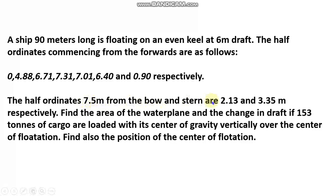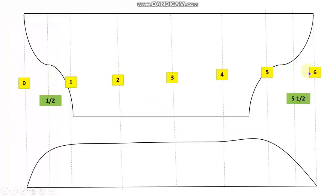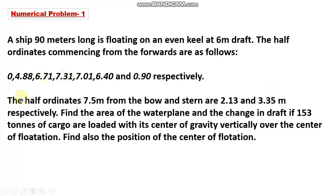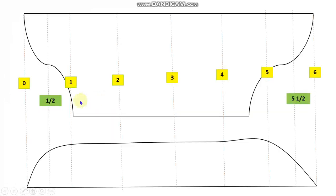There is also a mention of half ordinates 7.5 meters from bow and stern. For a 90-meter-long vessel with seven stations numbered zero to six, the common interval h = 90 ÷ 6 = 15 meters. So h in this question is 15. The half ordinates given are at a station 7.5 meters from the bow and 7.5 meters from the aft.